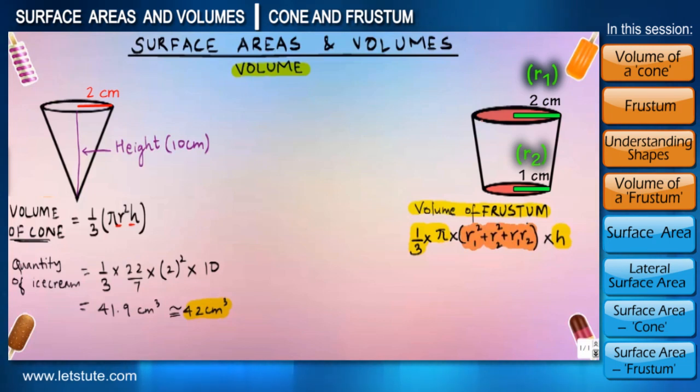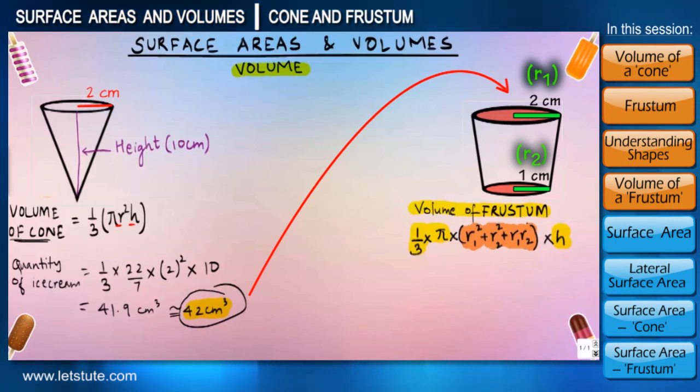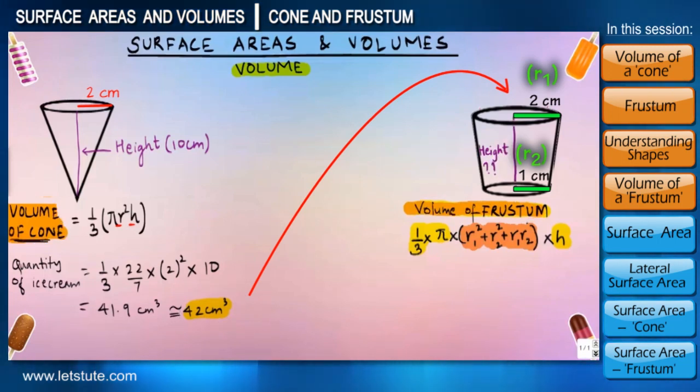Now suppose the company wishes to sell the same quantity of ice cream in the cup also as they sold it in a cone, which means they want the volumes of cone and cup to be same, then what exactly should be the height of the cup in order to contain 42 centimeter cube of ice cream which we just calculated for the cone.